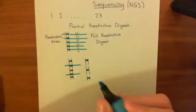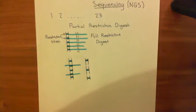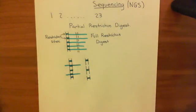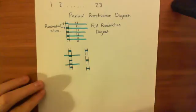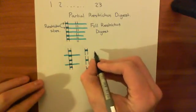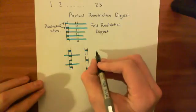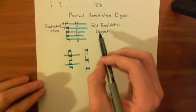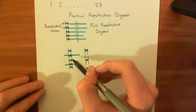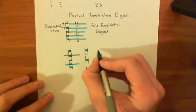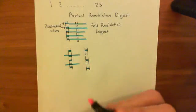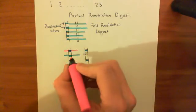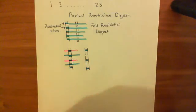You might ask, well what use is that? You can still sequence these fragments — they're slightly longer — but you're still no better off if you can't piece them back together. However, this is why it's important that you have multiple copies of chromosome 1, because on different copies the restriction enzymes will cut a different selection of the restriction sites.